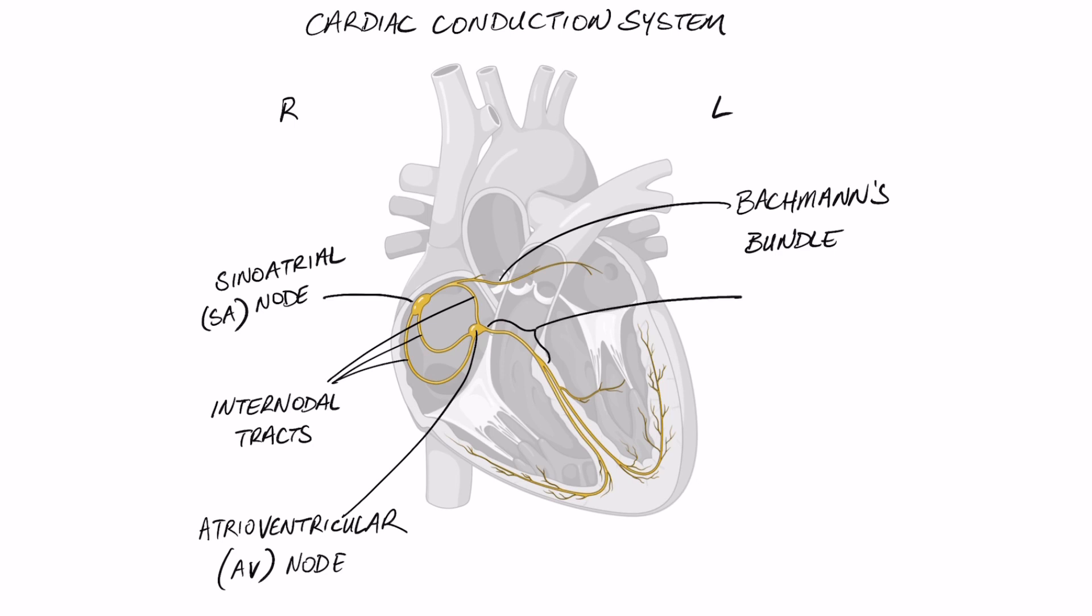All right, so we've started at the SA node. Most of the impulses have traveled down the internodal tracks and then reach the AV node where that delay has occurred and then from there that electrical impulse can continue on its merry way to finally reach the ventricles and first it'll go past the bundle of his.